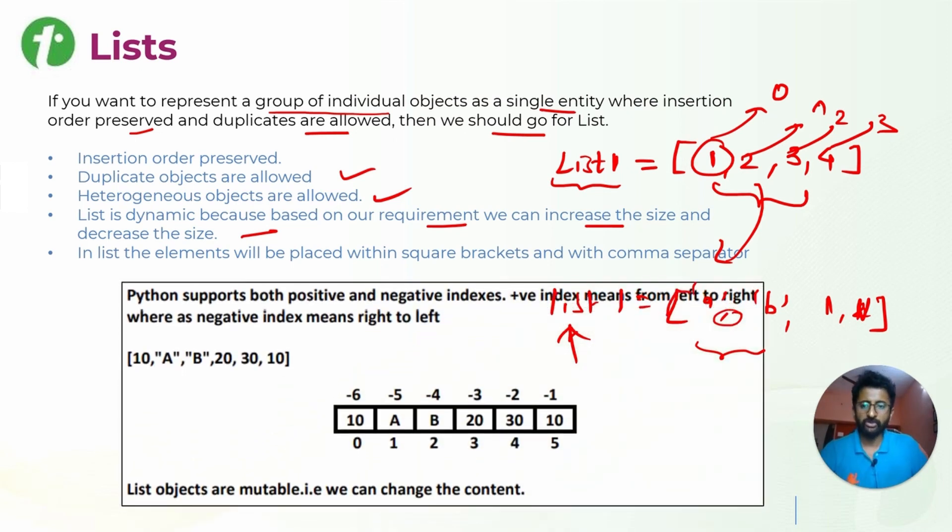Lists also support both positive and negative indexes. Positive means we are starting from this side, negative means we are starting from this side. So these are zero, one, two as positive indexes, and then minus one, minus two, minus three are the negative indexes. Whenever somebody is asking for this element 10, it is having positive index of zero and negative index of minus six.